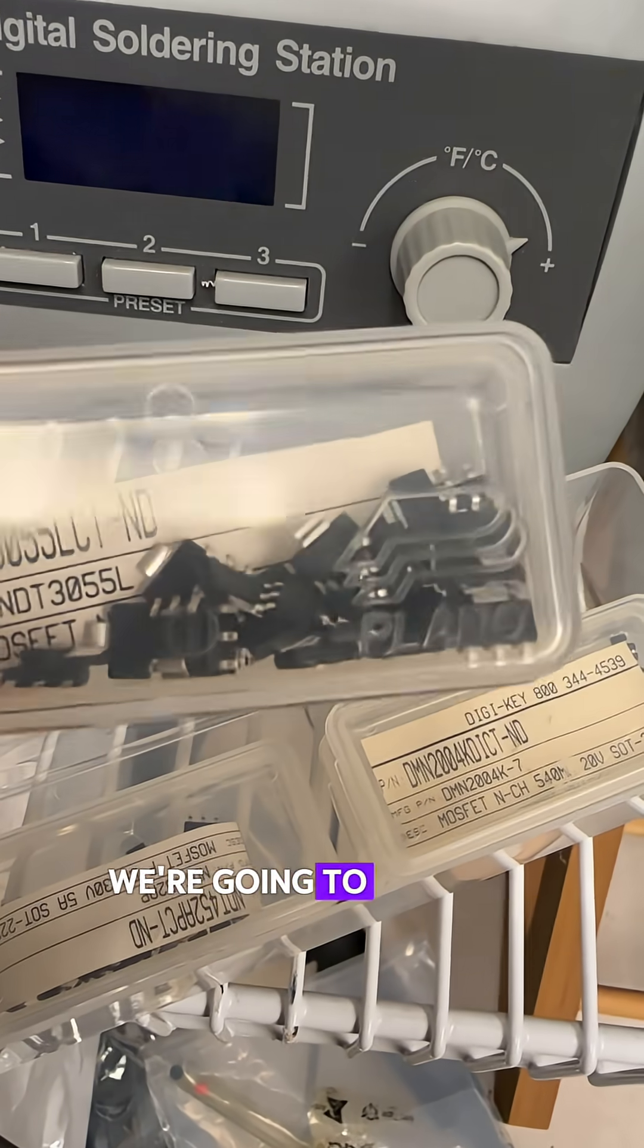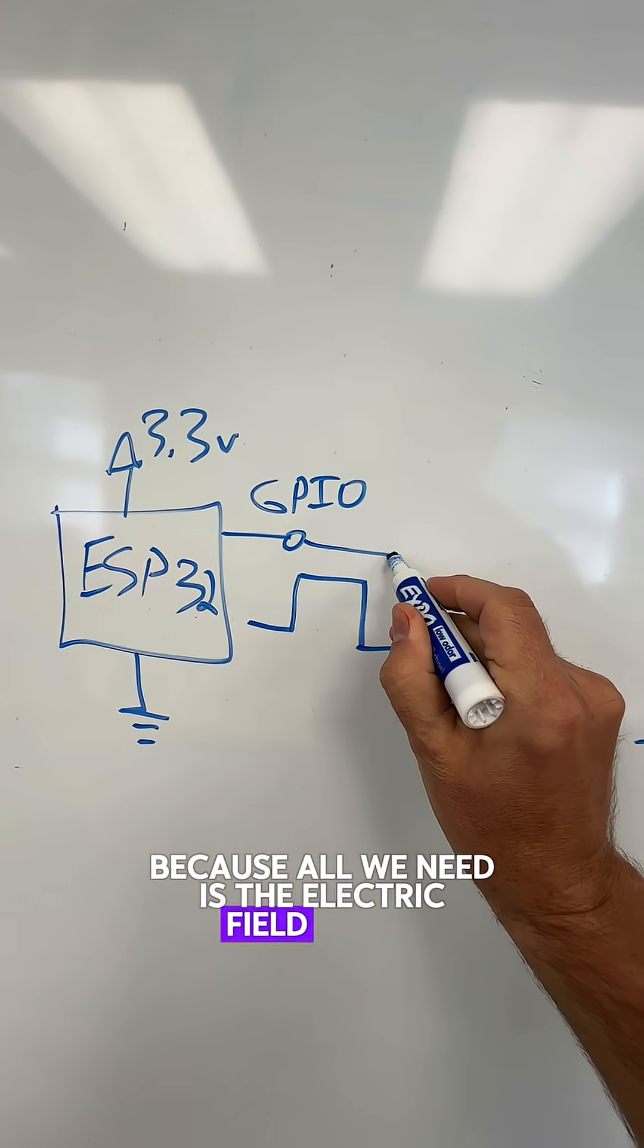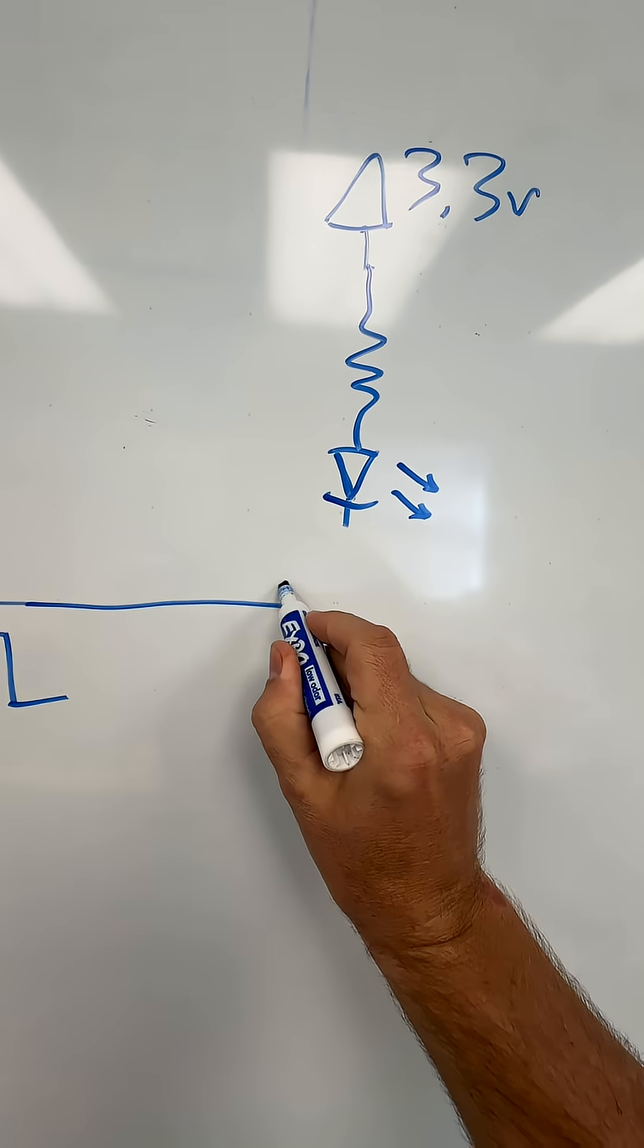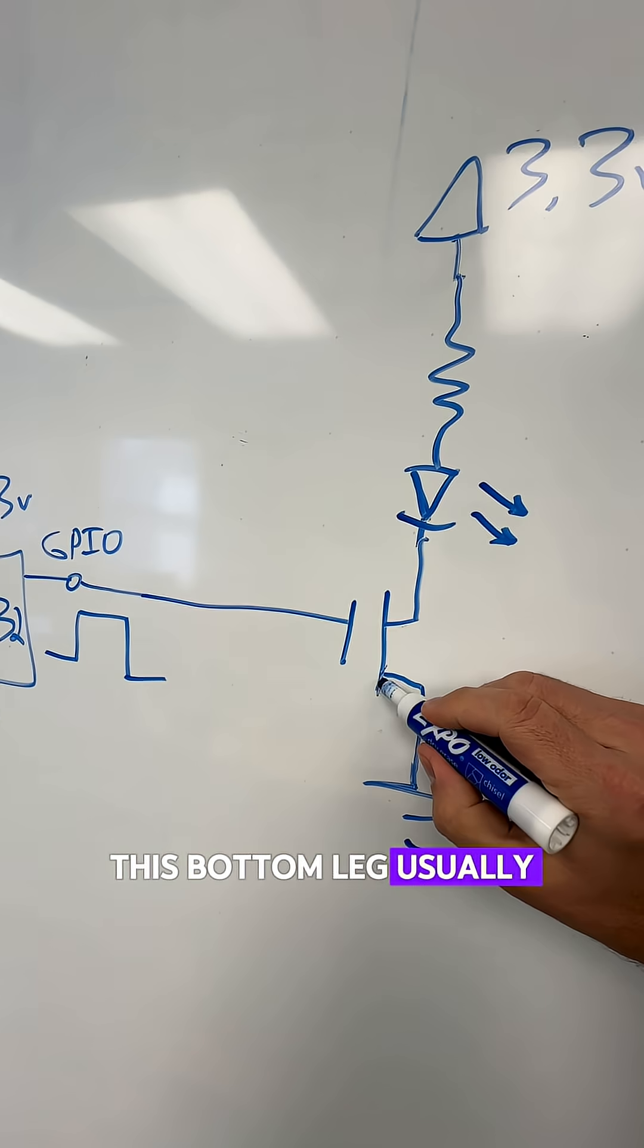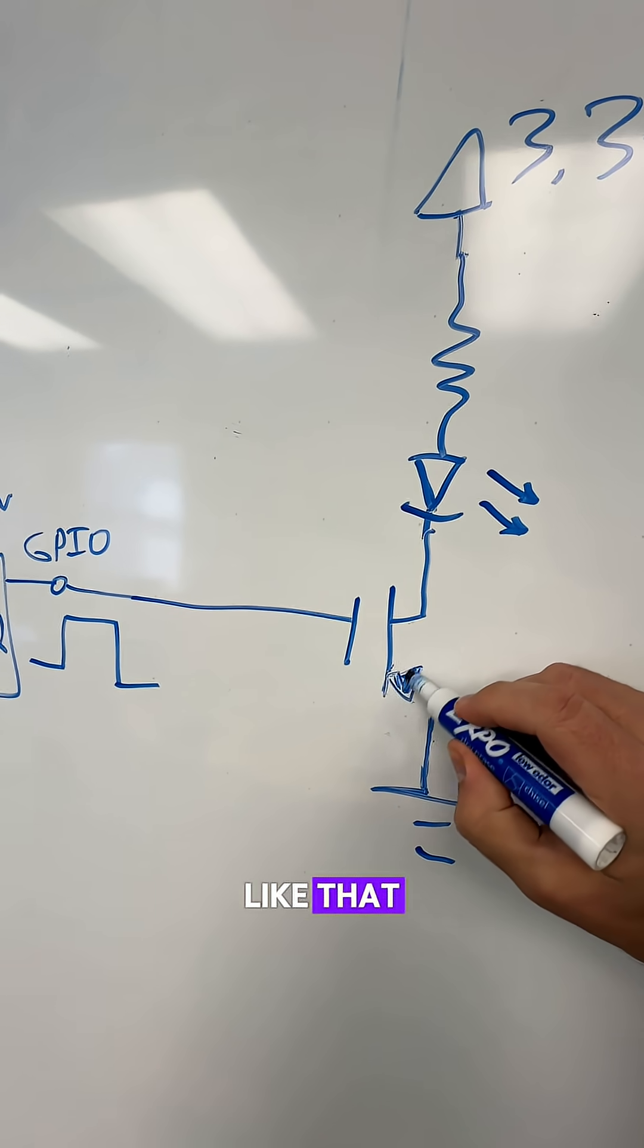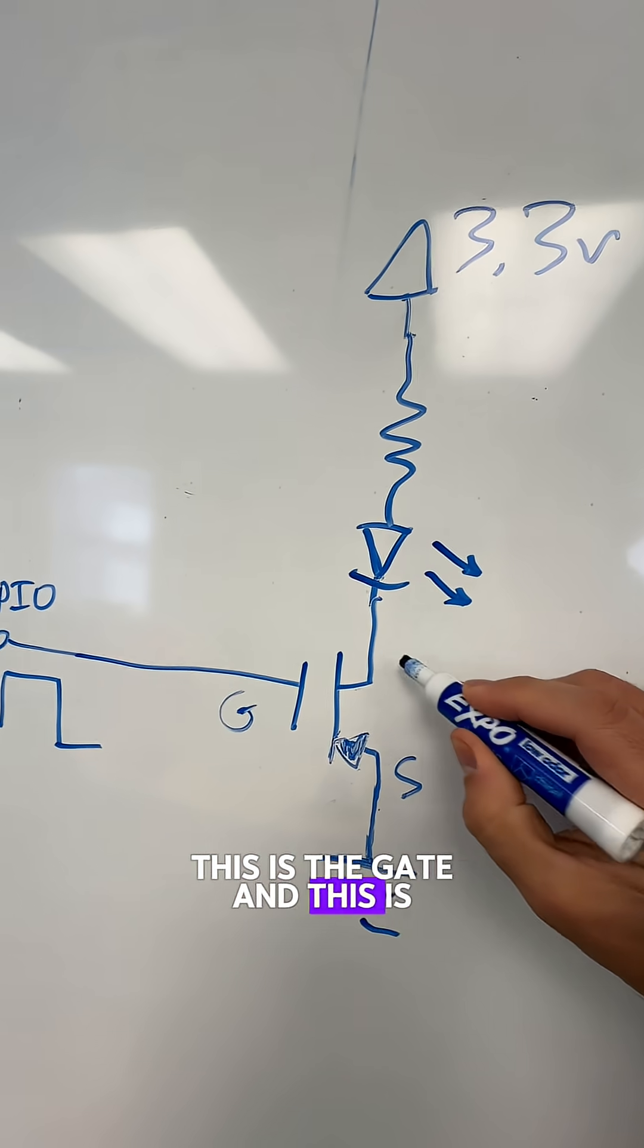And the way you draw this is we're going to eliminate our resistor there because all we need is the electric field going over to a gate. So the symbol actually looks like a capacitor. This bottom leg usually has an arrow on it like that. And this happens to be called the source. This is the gate and this is the drain.